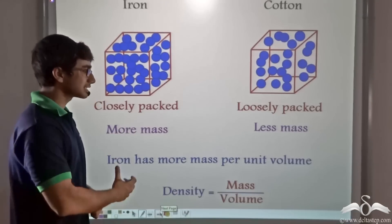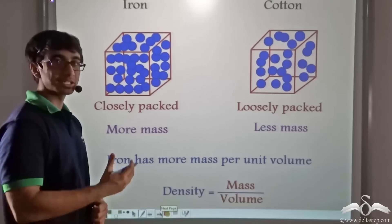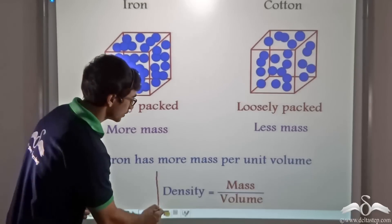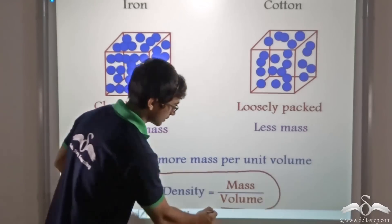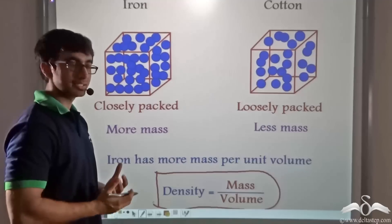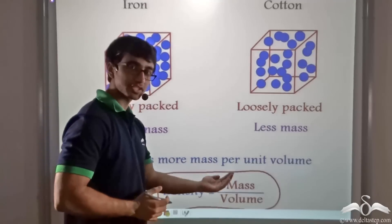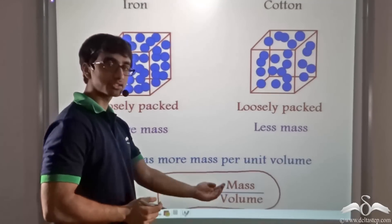Now this mass per unit volume has a particular name which is known as density. Density mathematically is given by mass of a substance divided by its volume.